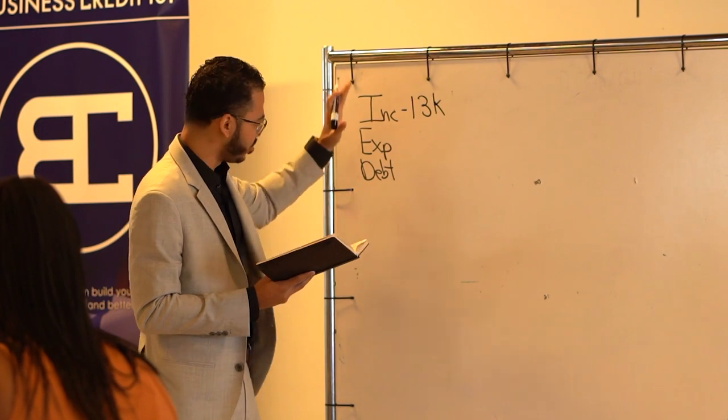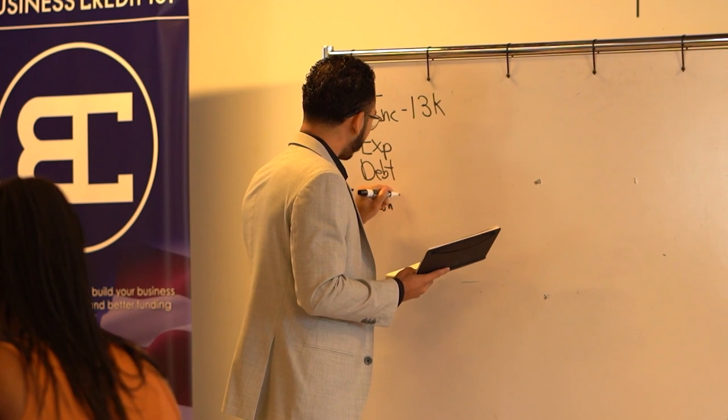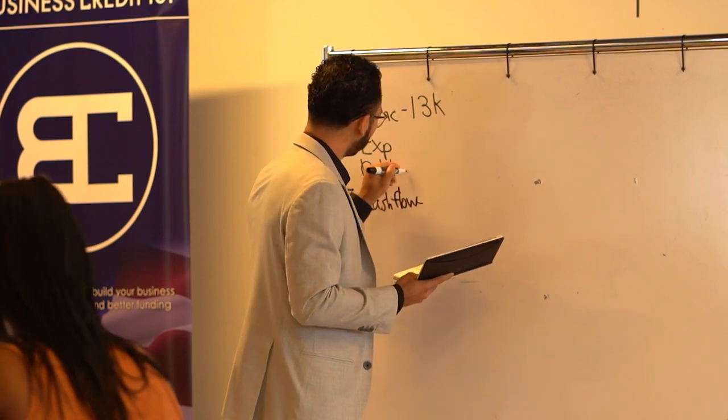So, four major numbers, that's what we start off with: income, expense, debt, and cash flow, very important. That's where we start.